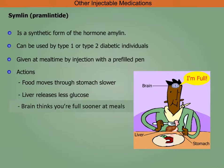Symlin is a synthetic form of the hormone amylin. It can be used by type 1 or type 2 diabetic individuals and is given at mealtime by injection with a pre-filled pen. Its actions include: food moves through the stomach slower, the liver releases less glucose, and the brain thinks you're full sooner at meals.